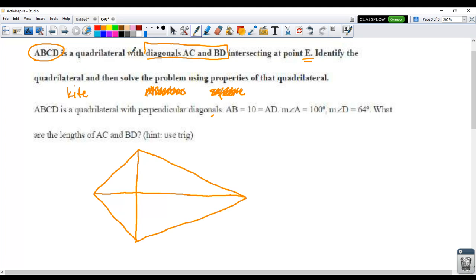So some things about kites, right? They are perpendicular diagonals. They have consecutive sides that are equal. Okay, one of these diagonals gets bisected and looks like this one is the one that does. So this diagonal gets bisected, the other one does not.